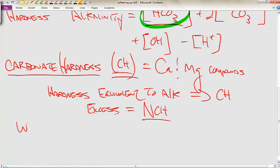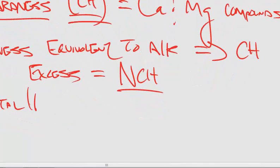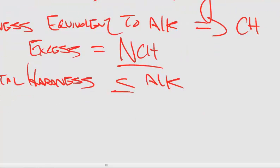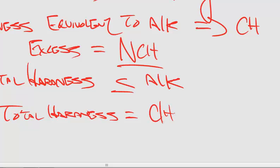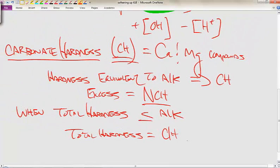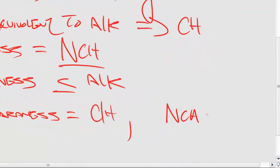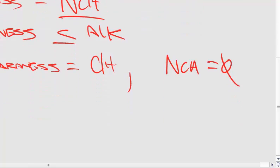When total hardness is less than or equal to alkalinity, then our total hardness is equal to our carbonate hardness and our non-carbonate hardness is equal to zero. We don't have any total non-carbonate hardness in our water.